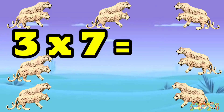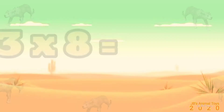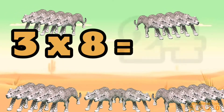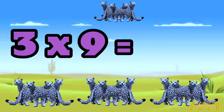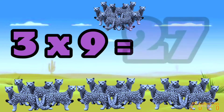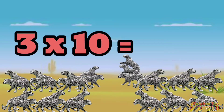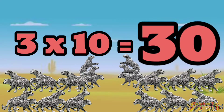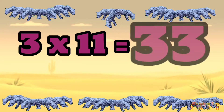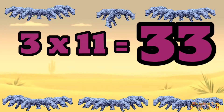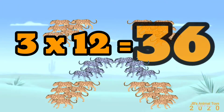3 times 7 is 21. 3 times 8 is 24. 3 times 9 is 27. 3 times 10 is 30. 3 times 11 is 33. 3 times 12 is 36.